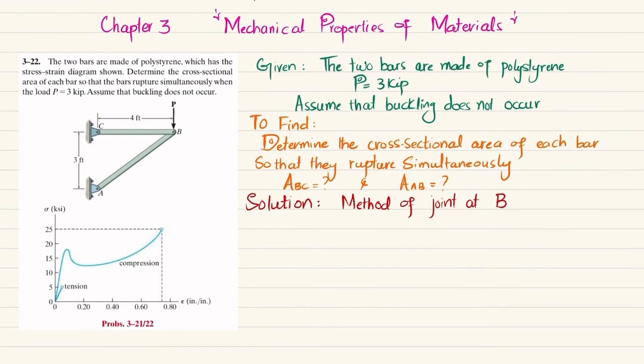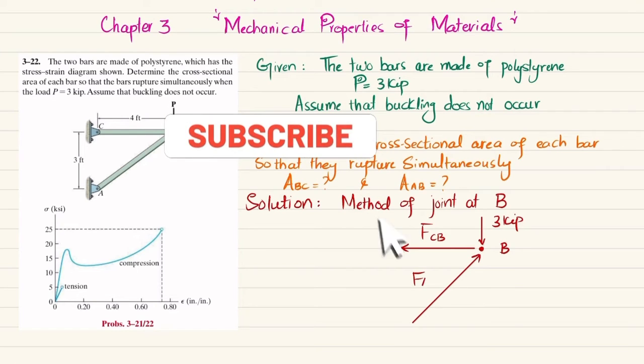So let this be point B. At point B we have P load which is 3 kips downward. The force exerted by bar CB on point B will be FCB. Similarly, the force that bar AB will exert on point B will be equal to FAB.